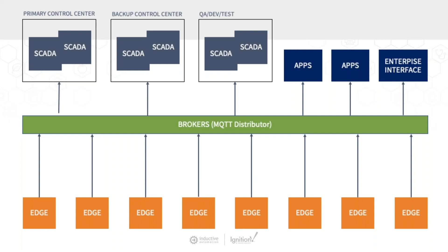Taking full advantage of the OT backbone, we can stand up a hot backup control center at an off-site location that runs independent of the main control system. Should there be a disaster and need to failover, the controllers head to that center and it can operate at the click of a button. QA, dev, and testing environments are also built in, allowing engineers and developers to work, test, and push changes into production — all seamless with Ignition's EAM module.